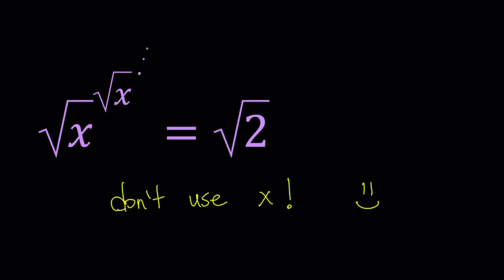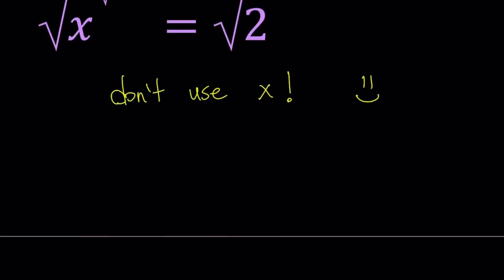Hello everyone. In this video we're going to be solving an interesting exponential equation. We have this equation: square root of x to the power of square root of x to the power of square root of x, and we're going to be solving for the x values. It's better not to use x in this equation because we're going to use x for a different purpose, so let's change that to another variable and write this equation with a.